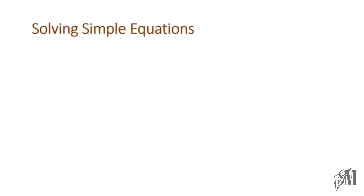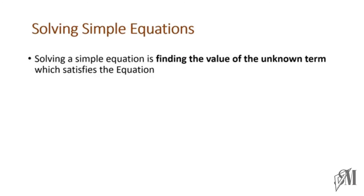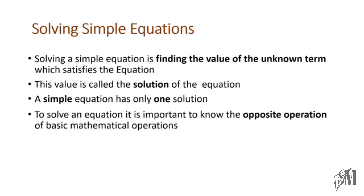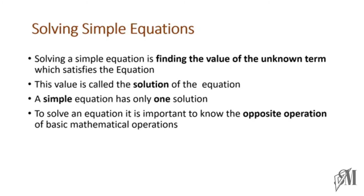In the next part we are going to see how to solve a simple equation. Solving a simple equation means finding the value of the unknown term which satisfies the equation — this is also called the solution of the equation. Since this is a simple equation, remember that simple equations have only one solution. To solve an equation you should know the opposite operations: the opposite of addition is subtraction, of subtraction is addition, of multiplication is division, and of division is multiplication.